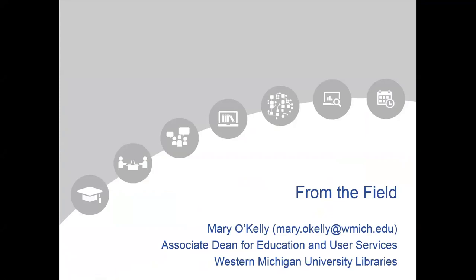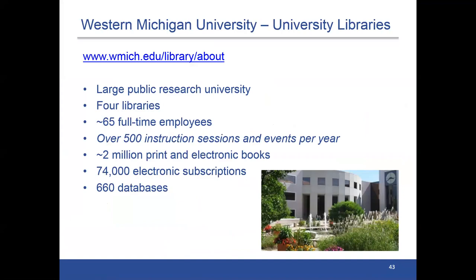I wanted to first give a little update on what our institution is, because we've got about 68 attendees in this webinar today from several dozen different kinds of institutions. We're a large public research university in Kalamazoo, Michigan. We have four libraries and about 65 full-time employees. At last count, we were doing over 500 instruction sessions, workshops, and events every year, and that's been rising every year. We've got about 2 million print and electronic books, with 74,000 electronic subscriptions and 660 databases.